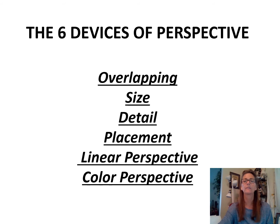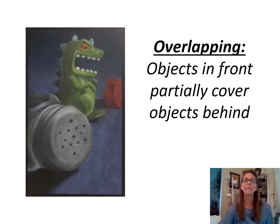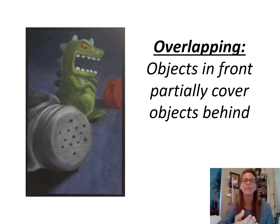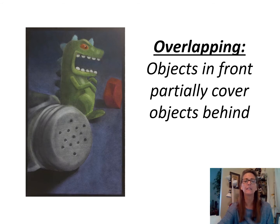Overlapping means objects in front are partially covering objects that are behind. So you just have one thing slightly covering another — they're not completely covering it so you can't see it at all, it's just right there where you can see one thing in front of another.